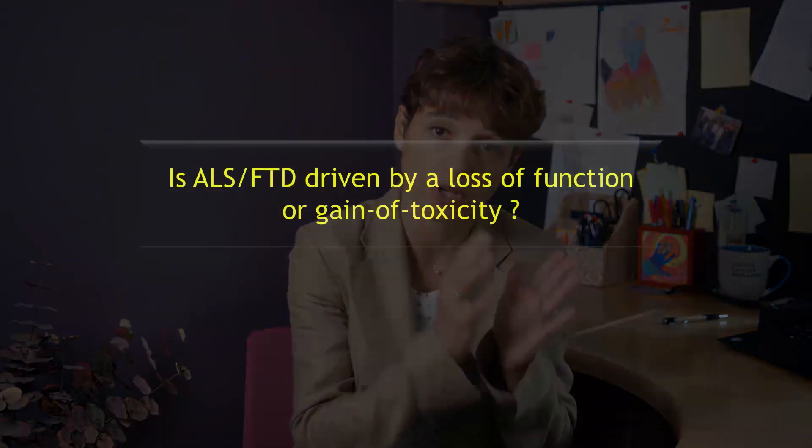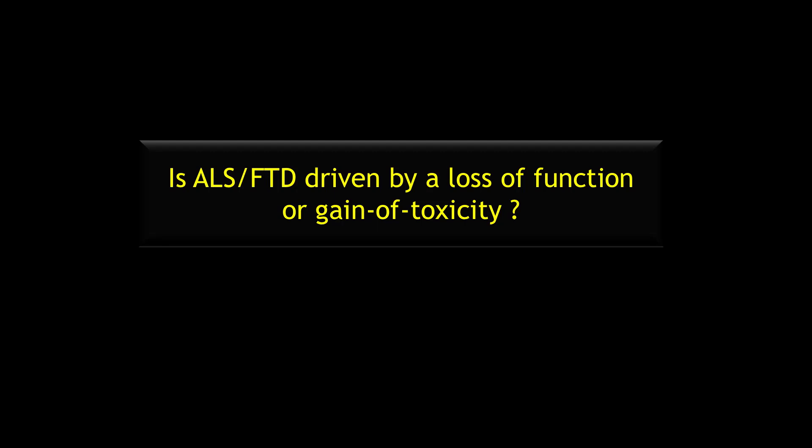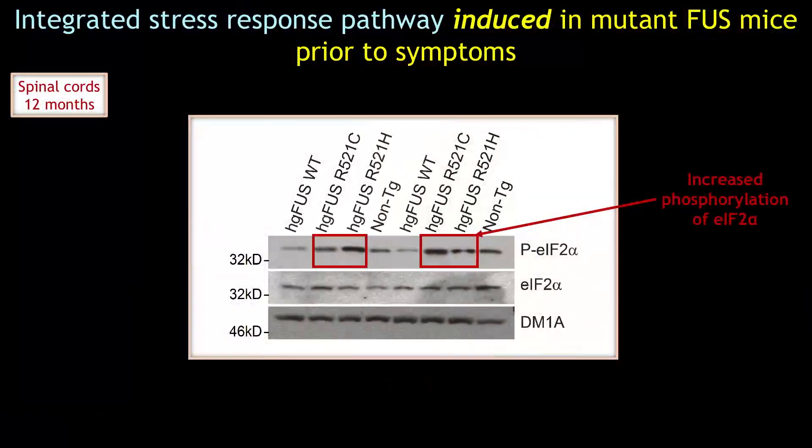Another question we asked was: do ALS and FTD-causing mutants of FUS, which are primarily found in the nucleus, drive disease through a loss of function or gain of toxicity? We found disease is driven primarily by a gain of toxicity associated with RNA expression changes, rather than loss of FUS function, as these changes did not overlap with those caused by the loss of FUS. One really interesting finding was that the integrated stress response was significantly up-regulated in our mutant animals, with increased phosphorylation of EIF2-alpha, a master controller for protein synthesis, and this is what led us to investigate the possible role of FUS in protein translation.